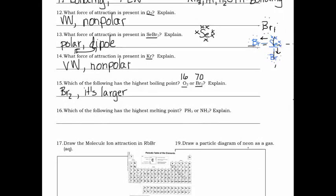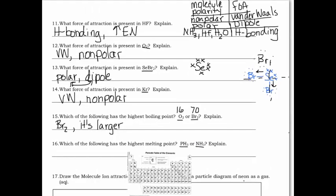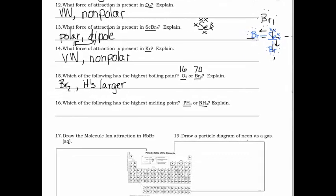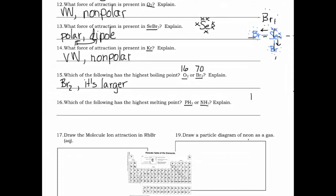Next: which has the highest melting point — PH3 or NH3? I immediately recognize NH3 from our memorized list of hydrogen-bonding molecules. Normally if you had two polar molecules you'd compare by size. But since NH3 has hydrogen bonding, it always has a higher melting or boiling point than a similar polar molecule with only dipole forces. The answer is NH3 because it has hydrogen bonding, which is a stronger force of attraction than dipole.